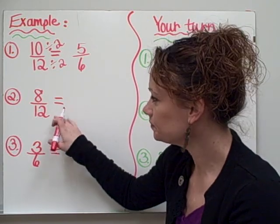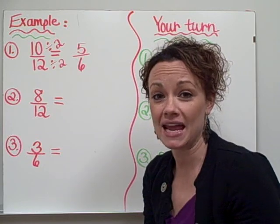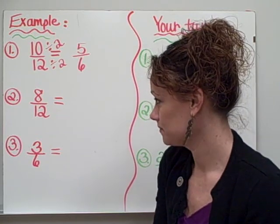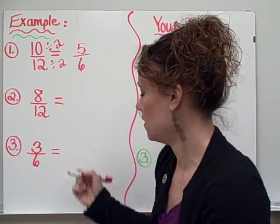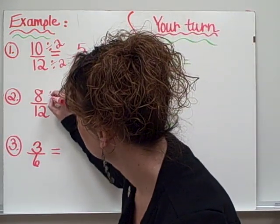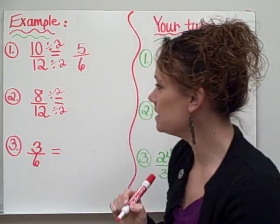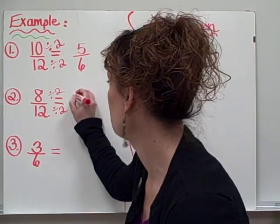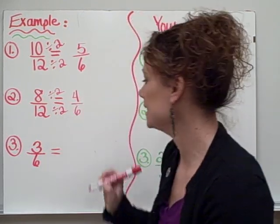Let's try the next one. 8 twelfths. So we need to think of a number that goes into both 8 and 12. Now let's try 2 because I know 2 goes into 8 and I know 2 goes into 12. So we'll try dividing by 2. 8 divided by 2 equals 4. And 12 divided by 2 equals 6.